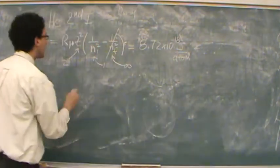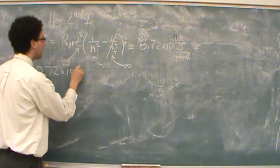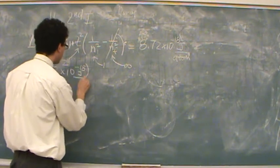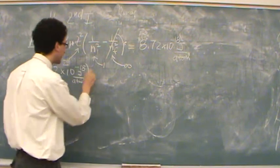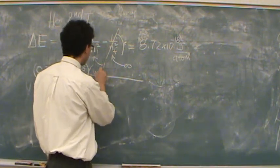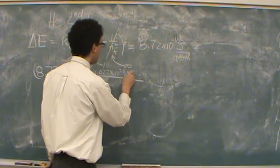So you need to take that number. 8.72 times 10 to the minus 18. And this is joules per atom. And use Avogadro's number to go to moles. So that would be 6.022 times 10 to the 23rd atoms per mole.